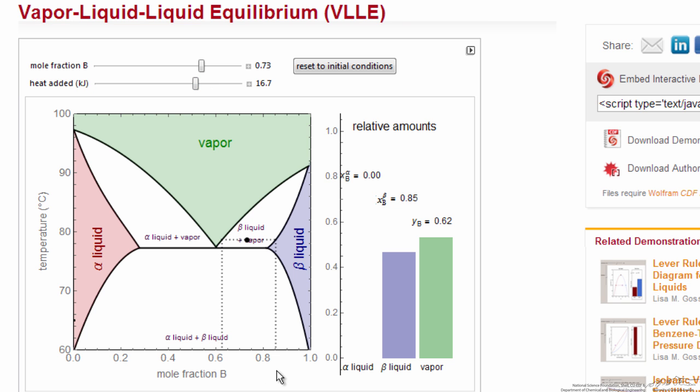The dashed lines indicate the compositions of liquid and vapor. In this case it's the beta liquid enriched in component B and vapor. The temperature of evaporation changes as we add heat until we're all in the vapor phase.